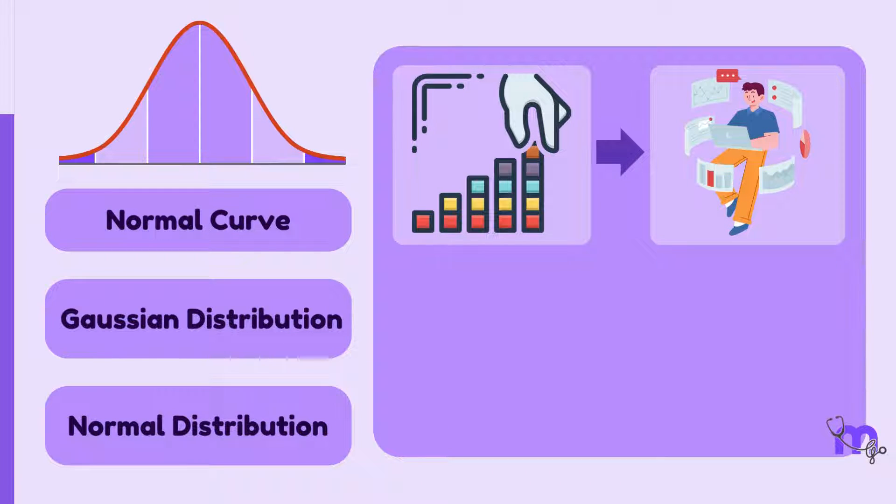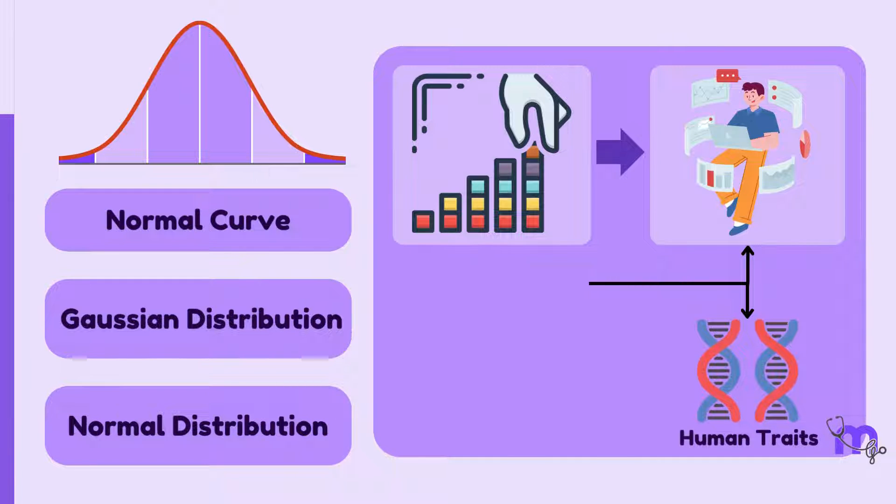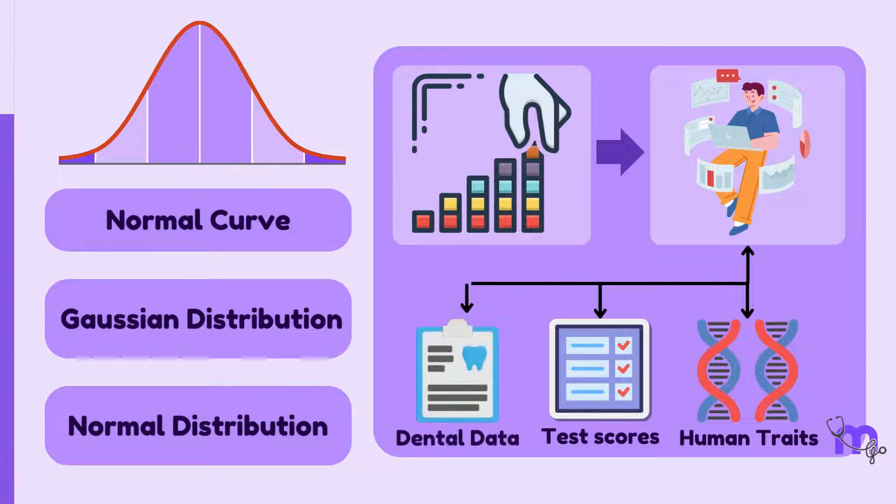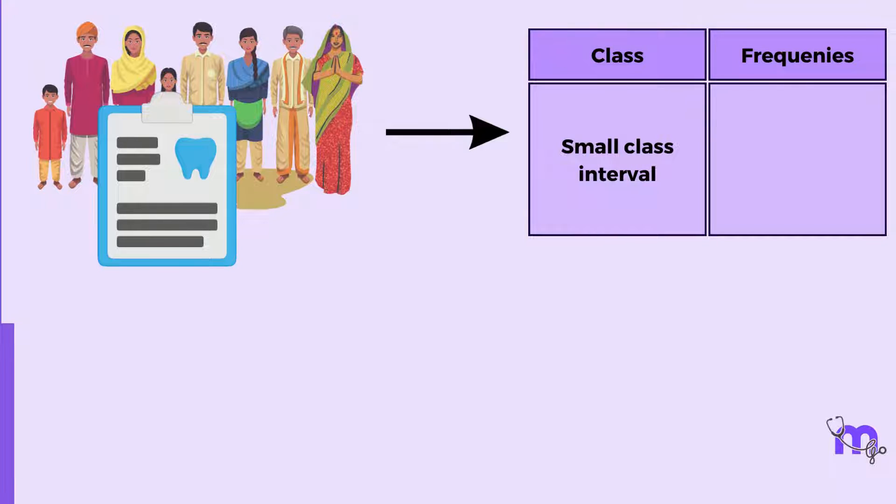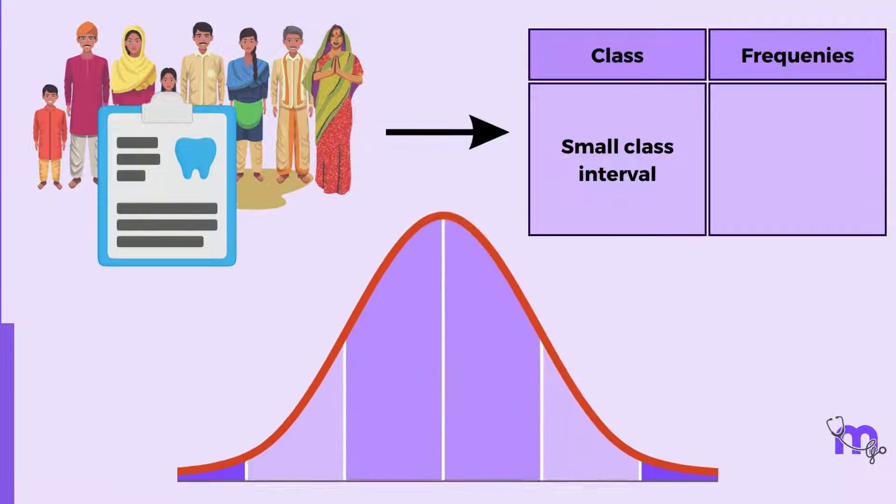This includes human traits, test scores, and even dental health data. When data is collected from a very large number of people and a frequency distribution is made with a narrow class interval, the resulting curve is a smooth and symmetrical curve, which is the normal curve.